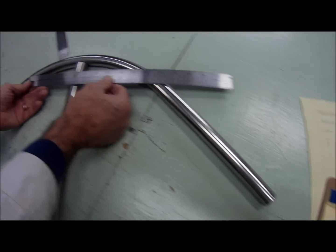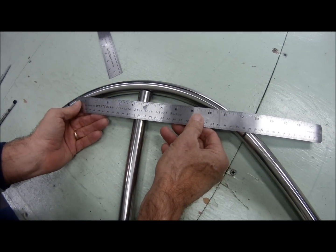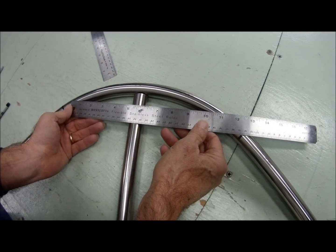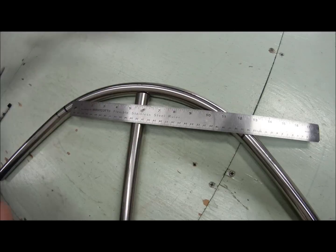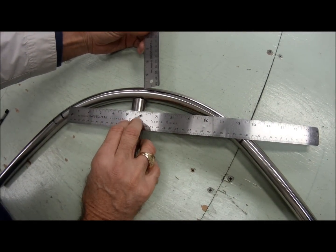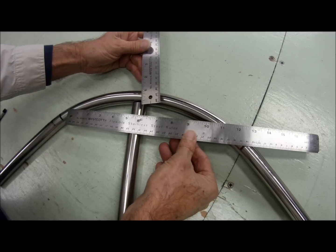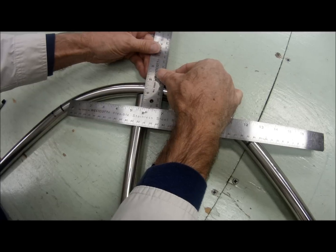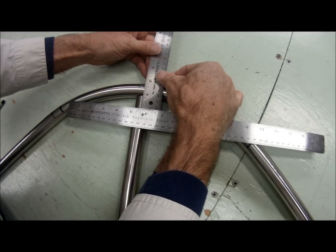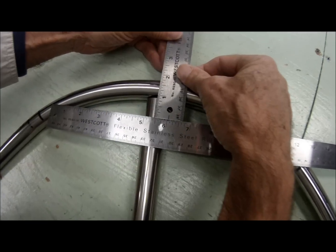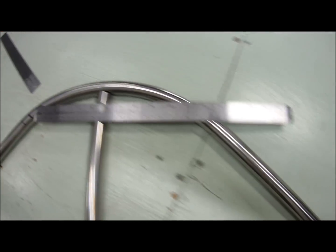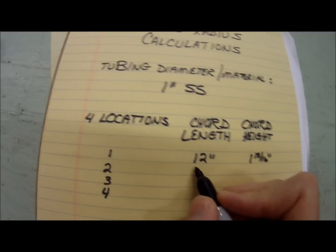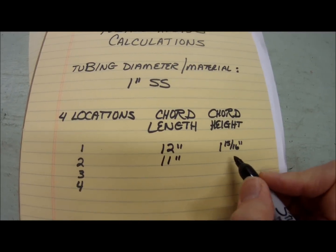For the second reading, we're going to do 11 inches. So we want zero at one center line and 11 at the other one. And again, at half of 11, which is five and a half, we're going to go up and we're going to get a reading of 1 and 9/16 inches. Write down for location two: cord length of 11 inches and 1 and 9/16 for the cord height.